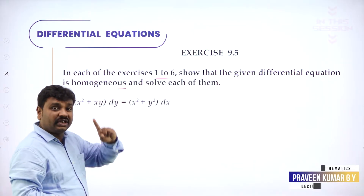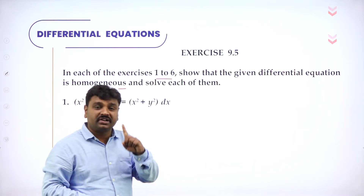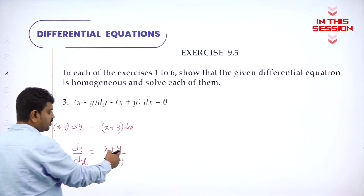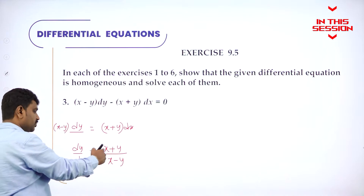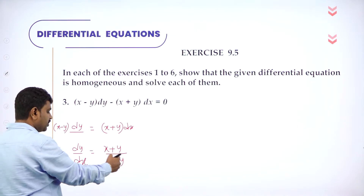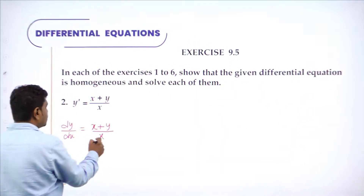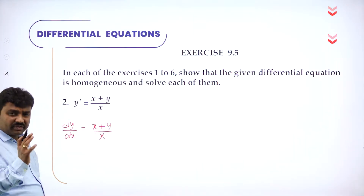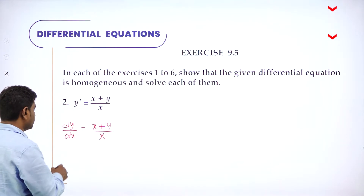If the degree of the numerator and degree of the denominator are the same — each term is having the same degree, power 1 each — you can see both numerator and denominator are having the same degree, therefore it is homogeneous.